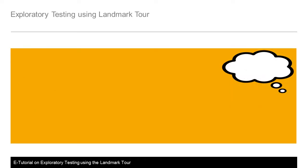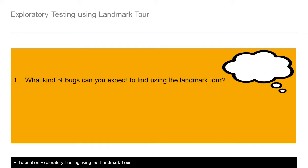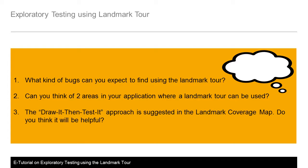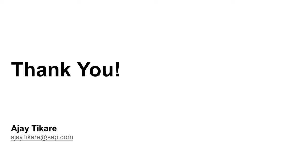Before we close, let me leave you with a few questions for thought. What kind of bugs can you expect to find using the landmark tour? Can you think of two areas in your application where a landmark tour can be used? The 'draw it, then test it' approach is used in the landmark coverage map — do you think it will be useful? Hope you found this tutorial useful. For any questions, you may reach me at ajai.tikare@sap.com. Thank you.